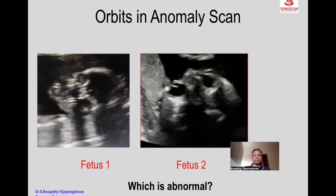Hi, we'll see another case scenario of image to diagnosis involving the fetal orbits. These are images of orbits taken during the anomaly scan of two fetuses — fetus 1 and fetus 2. Which of the cases do you think is an abnormal image of the orbit?